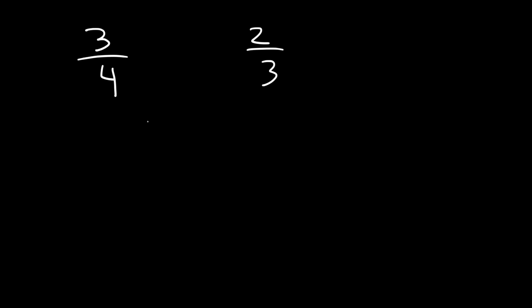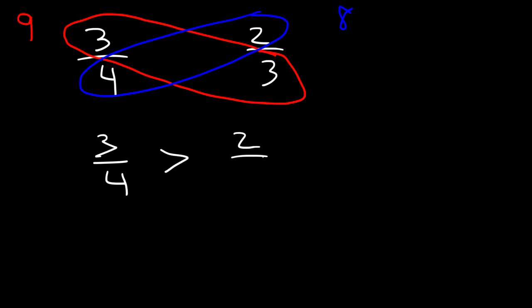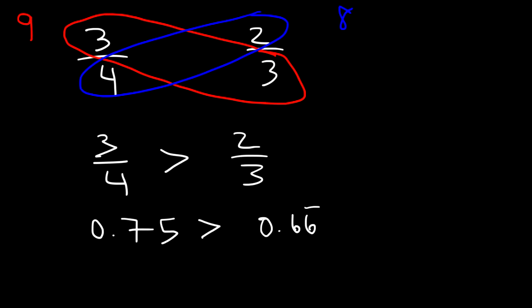Let's try the cross multiplication technique. We're going to multiply 3 by 3, which is 9. Next, we're going to multiply 4 and 2, which is 8. So 9 is larger than 8. Therefore, 3 divided by 4 is greater than 2 divided by 3. Let's confirm it with a calculator: 3 divided by 4 is 0.75, and 2 divided by 3 is 0.6 repeating. Since 0.75 is larger than 0.66, we can see that this technique works.